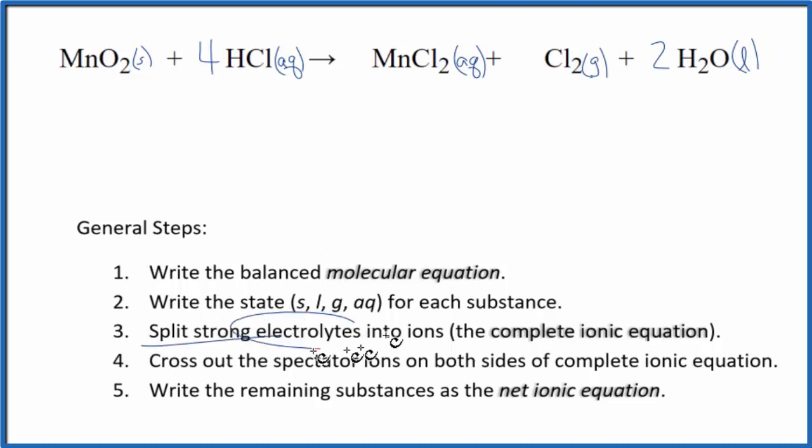Now we can split the strong electrolytes into ions for the complete ionic equation. MnO2, that's a solid, so we just write MnO2. And I'll write the states at the end. Hydrogen, group 1, 1 plus ionic charge. Cl 1 minus. So we have 4 hydrogen ions, 4 of those hydrogen ions, plus 4 chloride ions, Cl minus. Those are the reactants in our net ionic equation.